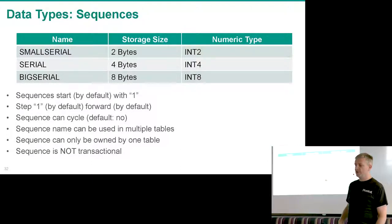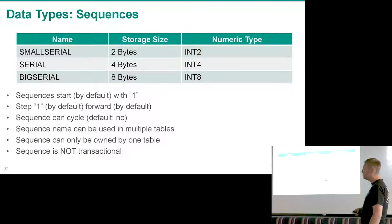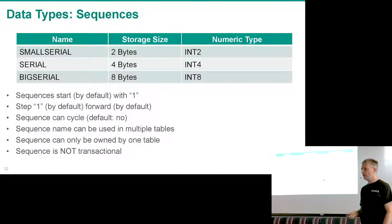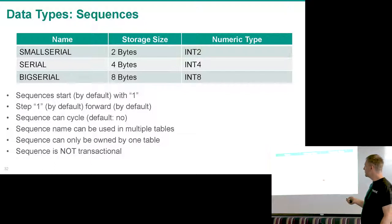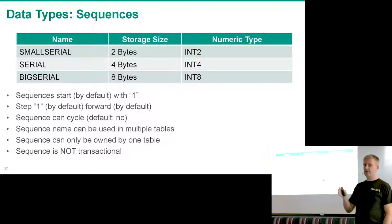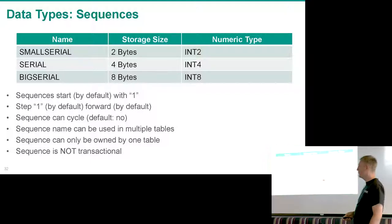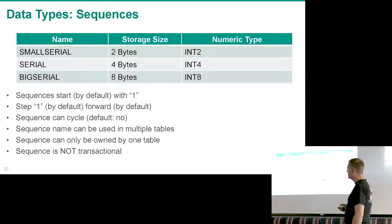We also have sequences — in other databases they're known as auto-increment columns. In Postgres it's a regular data type with a sequence attached. When you specify serial as a data type, Postgres uses an integer, creates a sequence, attaches it to the table, and makes it the default value for the column. A sequence by default starts at one, increments by one, and does not cycle.